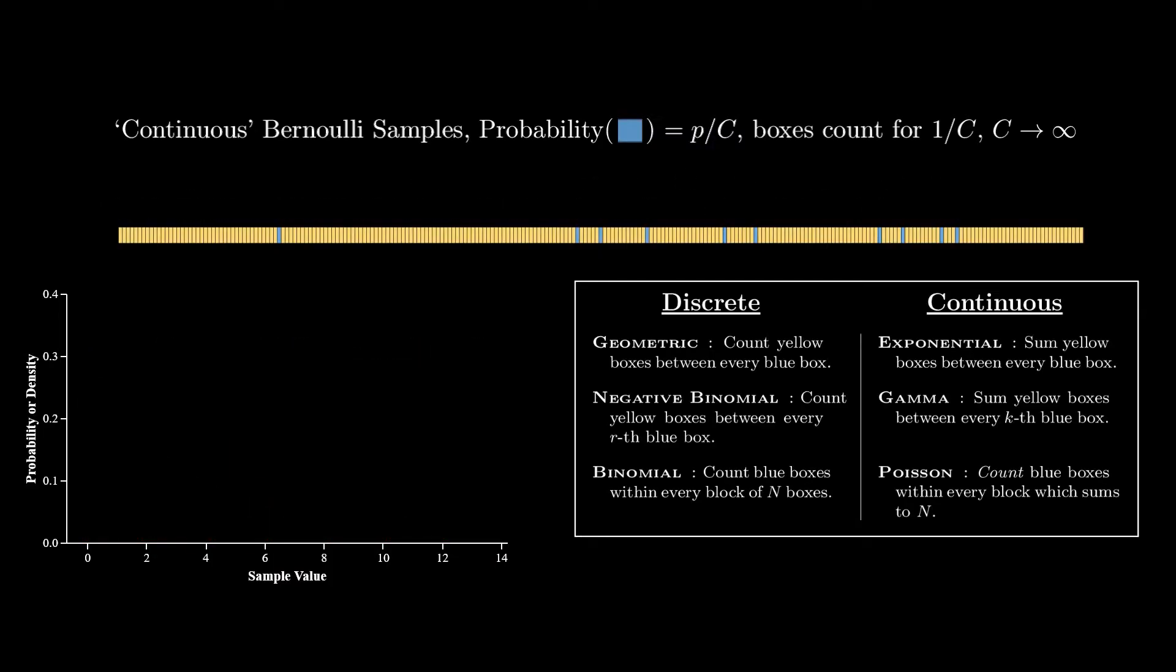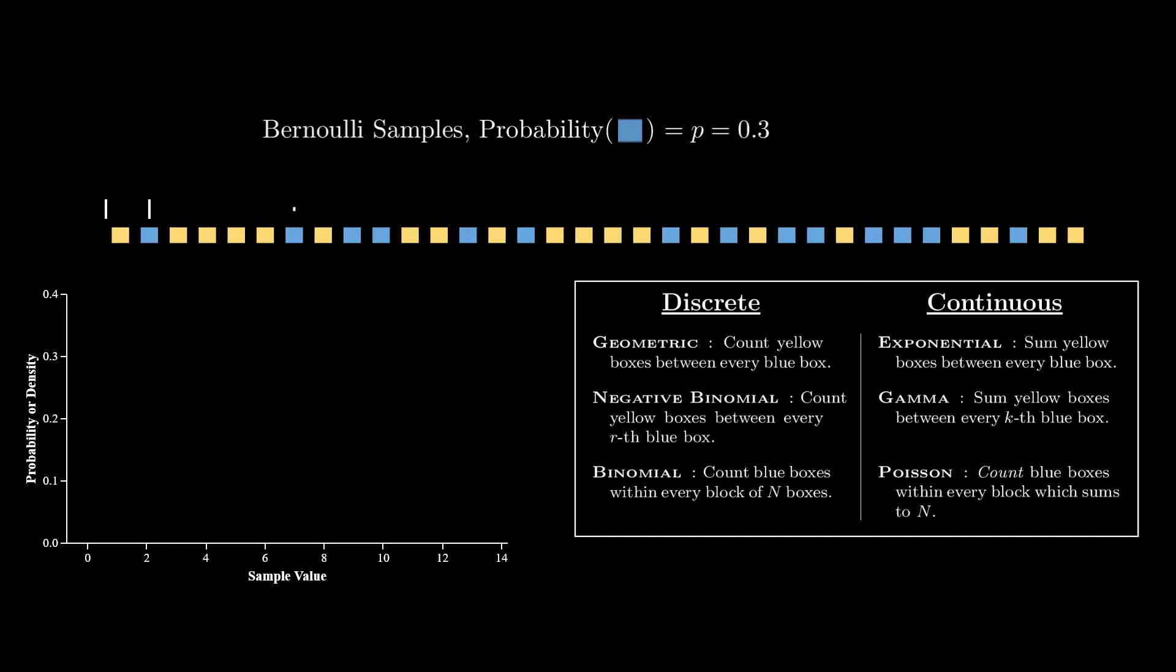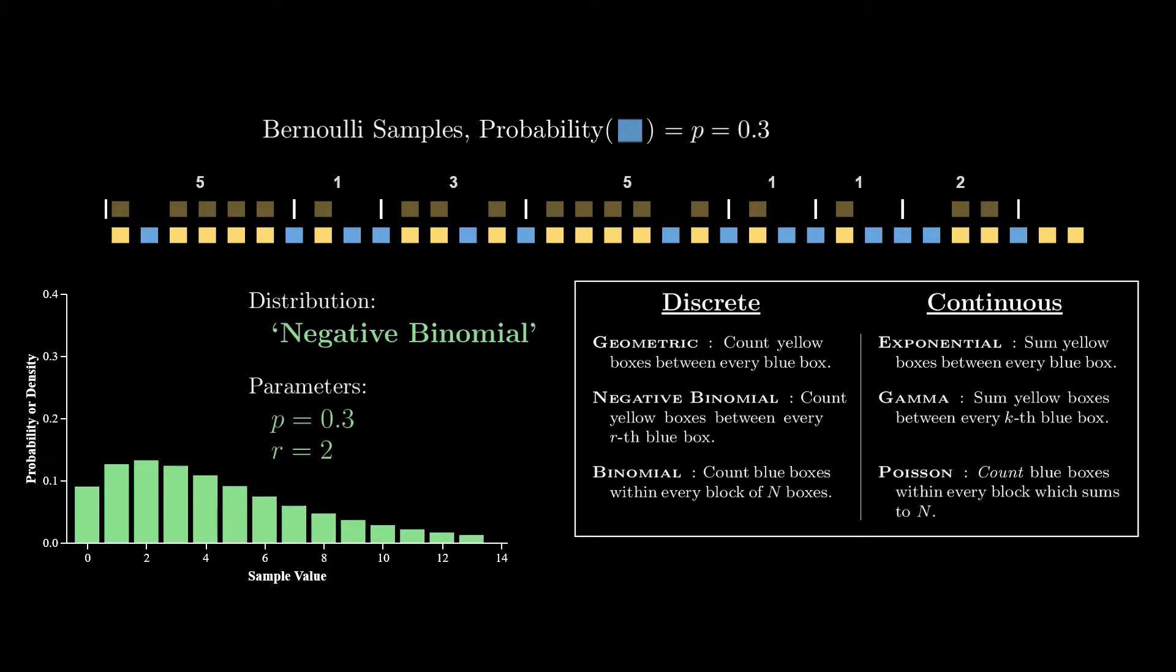The next pattern to notice is the summation relationships. That is, if you sum samples of the geometric you get the negative binomial, and by analogy if you sum up the exponential you get the gamma. To see that, let's revisit those separating lines of the geometric. Now, if you wanted to show the sum of two geometrics with this view, how might you do that? Well, since we know the geometric is just the number of yellow boxes between lines, we could drop every other line and then count between the remaining lines. But notice, these are exactly the same separating lines of the negative binomial with r equal to 2. So we see, summing up geometrics gives us a negative binomial. And by analogy, the same argument shows that the gamma is a sum of exponentials. Now that is insight.